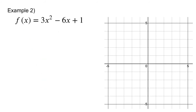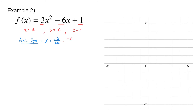Now let's go through an example problem. It's really important that we identify a, b, and c. So you should see that a is equal to 3, b is equal to negative 6, and c is equal to 1. To graph this, I first want to find the axis of symmetry using x equals negative b over 2a: that's the opposite of negative 6 over 2 times 3, which is 6 over 6, equal to 1. So my axis of symmetry is at x equals 1.